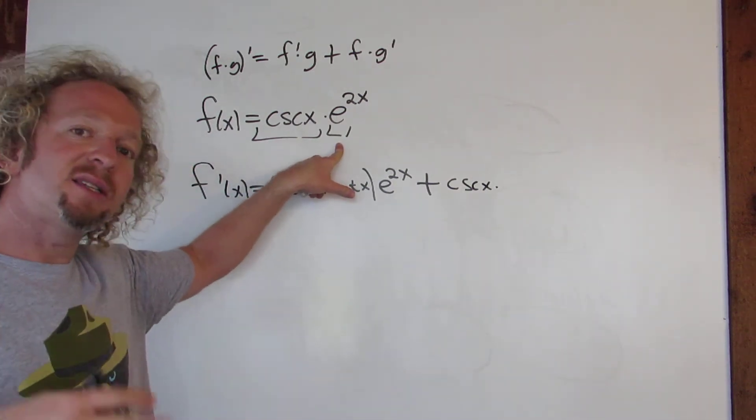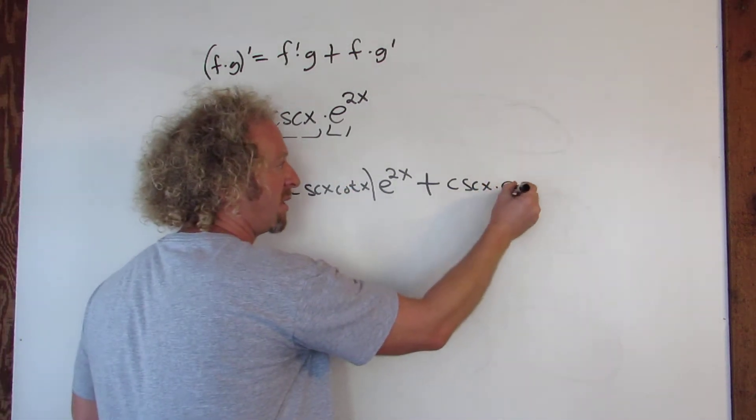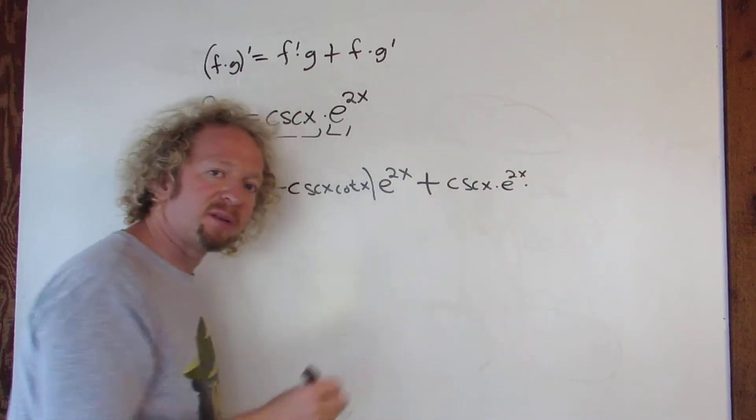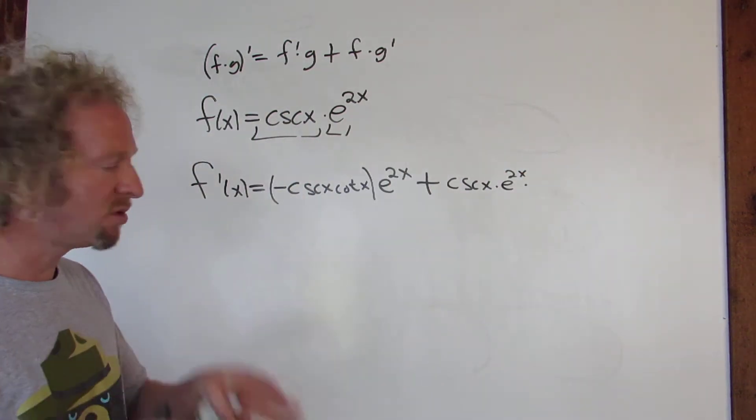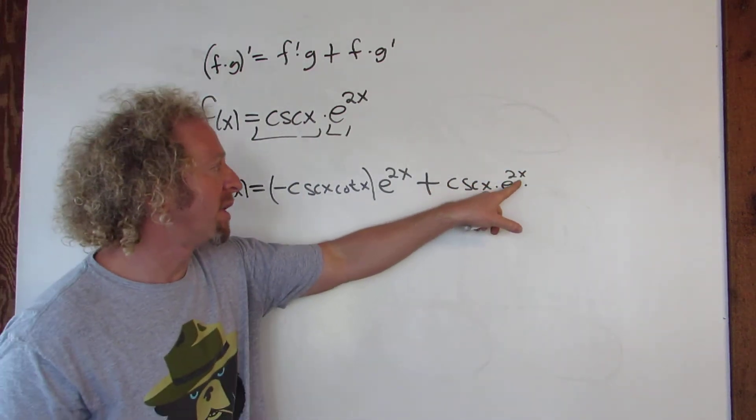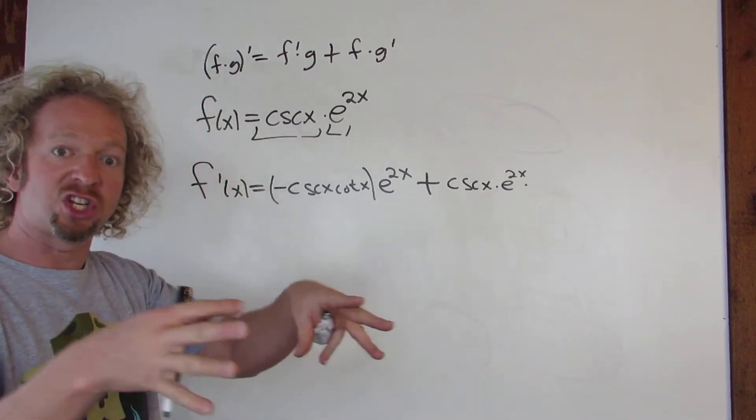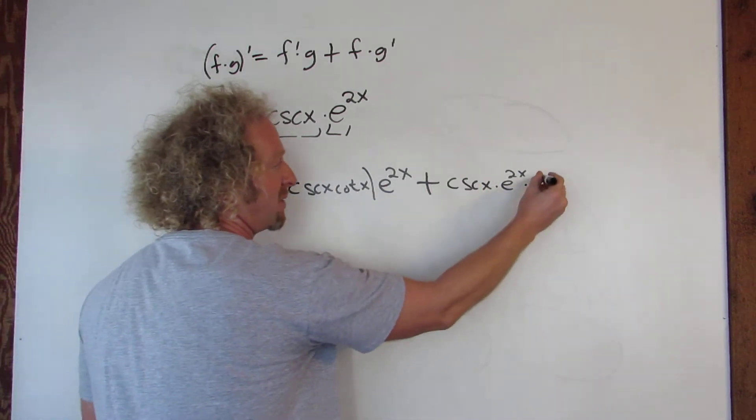Now the derivative of e to the x is e to the x. This is e to the 2x, but then you have an inside piece, right? Your inside function is 2x, so you have to multiply by the derivative of the inside function. That's the chain rule. So the derivative of 2x is 2.